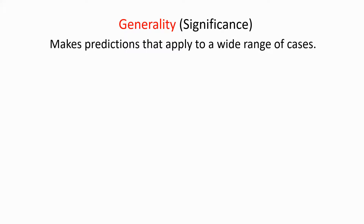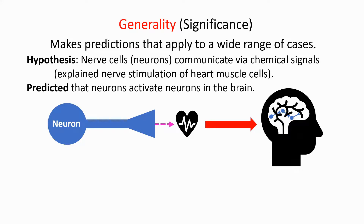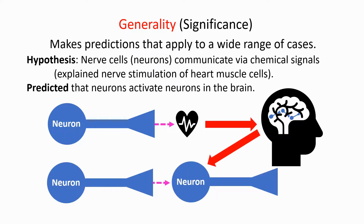Now we come to the second property of a good hypothesis: generality, which means that the hypothesis makes predictions that apply to a wide range of cases. Here is an example from neuroscience. The hypothesis is that nerve cells, or neurons, communicate via chemical signals with their target cells by releasing a little bit of chemical onto them. This hypothesis was developed to explain nerve stimulation of heart muscle cells, which it does quite well. But it also predicted that neurons would activate other target cells, including neurons in other parts of the body and brain. This hypothesis has been tested an enormous number of times and found great support, making it a very powerful and good hypothesis.